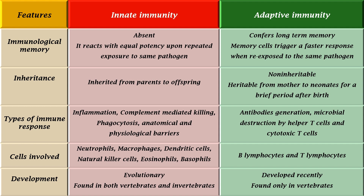Innate immunity is inherited from parents to offspring, whereas adaptive immunity is non-inheritable, but it is heritable from mother to neonates for a brief period after birth. Types of immune response in innate immunity include inflammation, complement-mediated killing, phagocytosis, anatomical, and physiological barriers.